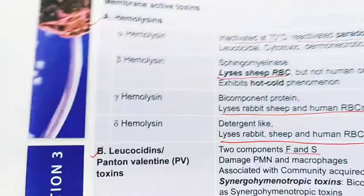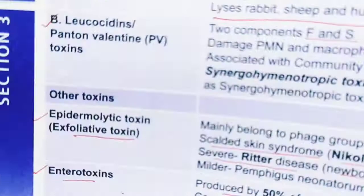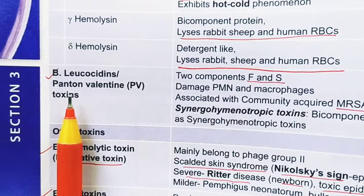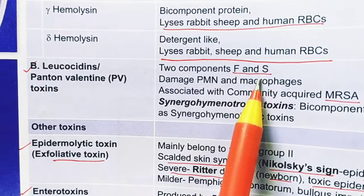Delta hemolysin is detergent-like and lyses rabbit, sheep, and human RBC. Leukocidin has two components, F and S. These two components work together in damaging PMNs (polymorphonuclear leukocytes) and macrophages.